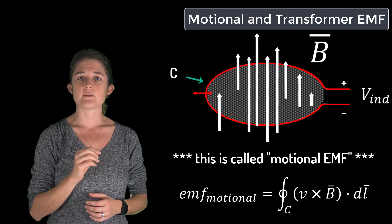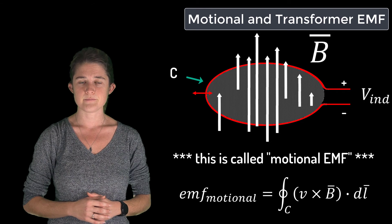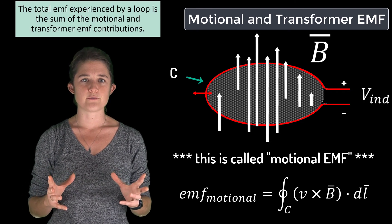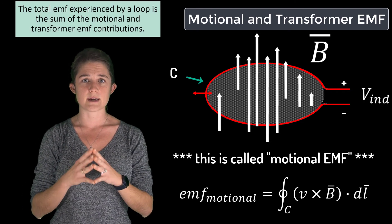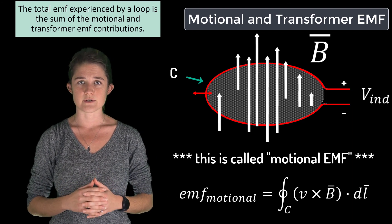It can be shown that motional EMF is equal to the integral around the contour of the moving conductor of the velocity crossed with the magnetic flux density dot dl. The total electromotive force experienced by a loop in a magnetic field is equal to the sum of the transformer and motional EMF contributions.